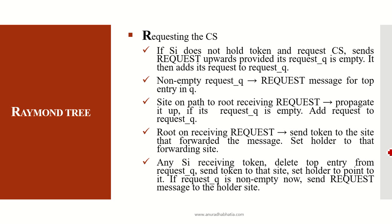When requesting the critical state: if SI, a site that does not hold the token, requests for the critical state, it sends a request upwards provided its request queue is empty. The data structure followed for Raymond Tree is a queue which follows first-in first-out logic. It then adds its request to the request queue. A non-empty request queue adds the request message at the top of the queue.